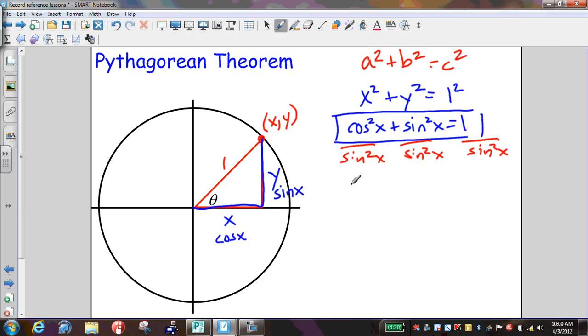So cosine squared divided by sine squared is the same thing as cotangent squared x. Sine squared divided by sine squared is simply 1. And 1 divided by sine squared is the same thing as cosecant squared x. So that is another trig Pythagorean identity we want to know. And we simply got that by dividing everything by sine squared.